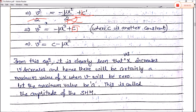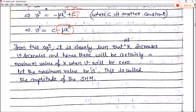It is clearly seen that as x increases, v decreases. The maximum value of x occurs when v equals zero. Let the maximum value be a — this is called the amplitude of simple harmonic motion, i.e., the maximum displacement. Note that here 'a' (capital A) is the amplitude, not the acceleration.